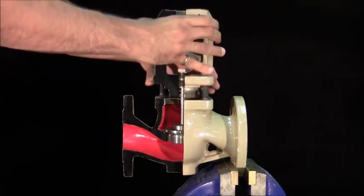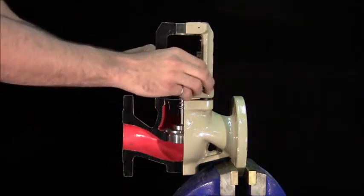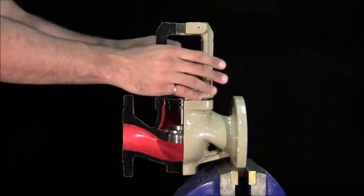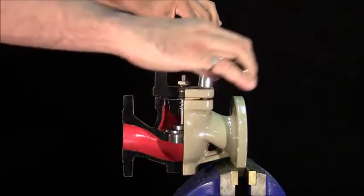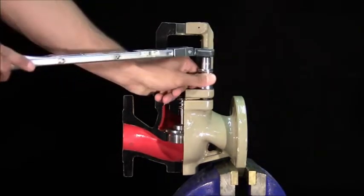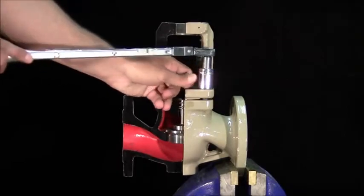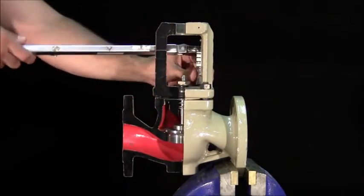The valve bonnet can now be carefully placed on the body. Install the nuts onto the studs until snug. A torque wrench will be used to tighten the nuts in a criss-cross fashion, tighten to 50% of the torque value and then again to 100%.